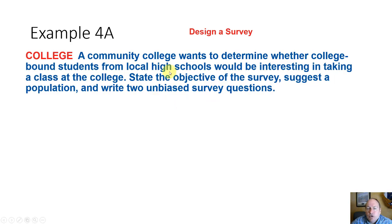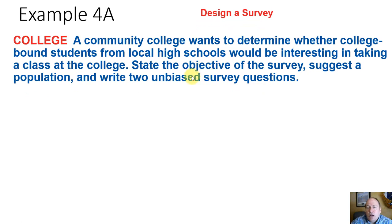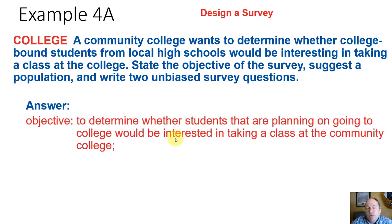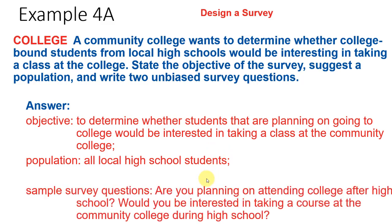Let's look at designing a survey. A community college, say Lewis and Clark, wants to determine whether college-bound students from local high schools would be interested in taking a class at the college. The objective is to determine whether students planning on going to college would be interested in taking a community college class. The population would be all local high school students, and we'd select a sample from that. Unbiased survey questions could be: 'Are you planning on attending college after high school?' and 'Would you be interested in taking a course at the community college during high school?'